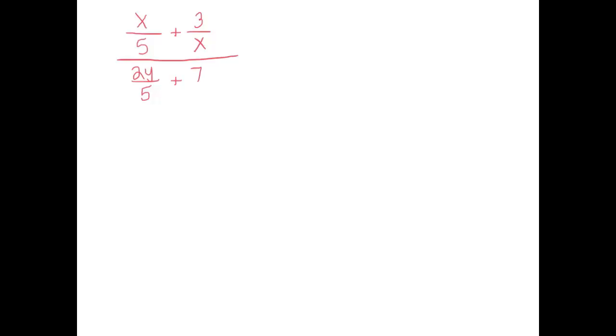Our last example is an example of a complex fraction. And, you've probably already noted why this is called a complex fraction. A complex fraction is a fraction within a fraction. You can have fractions within fractions within fractions if you want, but more than one iteration of that would be considered a complex fraction. So, here we have x over 5 plus 3 over x, that whole thing is the numerator, divided by 2y over 5 plus 7. So, our job is to simplify this. And, it's a little bit hard to wrap your brain around it when you look at it as a whole thing. So, what I'm going to ask you to do is just kind of ignore the denominator for a second. And, let's just look at the numerator.